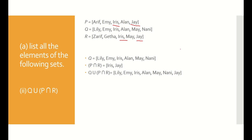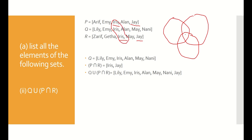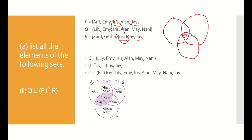Now to draw the Venn diagram: since all three sets share Iris, we use a three-circle diagram with Iris in the middle. The elements are already labeled from before. For set P intersect R, shade the region containing J and Iris. Then shade set Q. With union, the answer covers everything in both shaded regions, giving the combined area as the final answer for Q union (P intersect R).